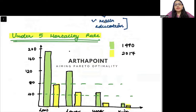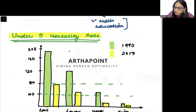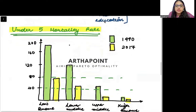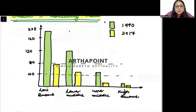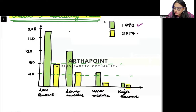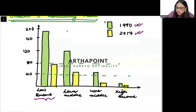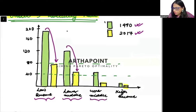This example looks at the under-5 mortality rate, comparing two years: 1990 and 2017, across low-income, low-middle-income, upper-middle-income, and high-income countries. Notice that for low-income countries, the mortality rate has decreased. For low-middle-income countries, the mortality rate has decreased. For upper-middle-income countries, the mortality rate has decreased. And for high-income countries also, the mortality rate has decreased.